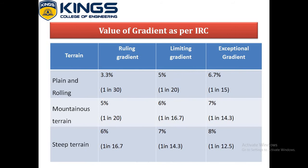The table shows the values of gradient recommended by IRC. For plain and rolling terrain: ruling gradient 1 in 30 or 3.3%, limiting gradient 1 in 20 or 5%, exceptional gradient 1 in 15 or 6.7%. For mountainous terrain: ruling gradient 6.7% or 6%, exceptional gradient 1 in 14.3 or 7%. For steep terrain: ruling gradient 1 in 16.7 or 6%, limiting gradient 1 in 14.3 or 7%, exceptional gradient 1 in 12.5 or 8%.